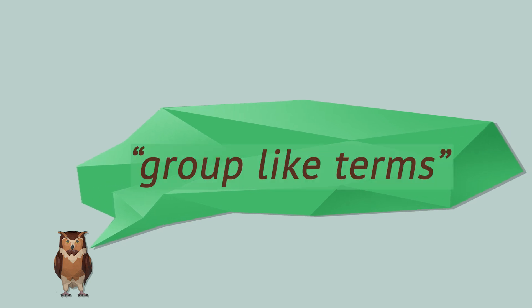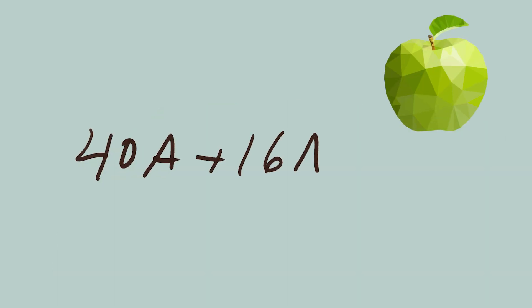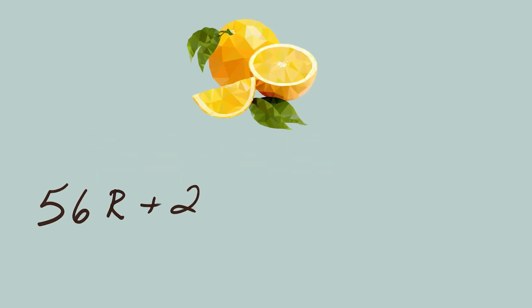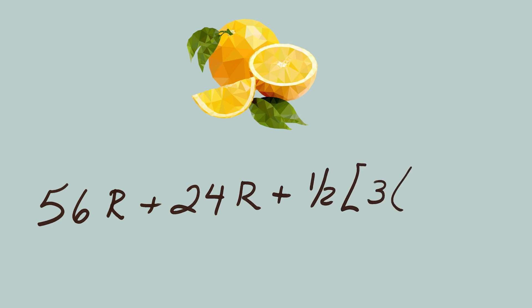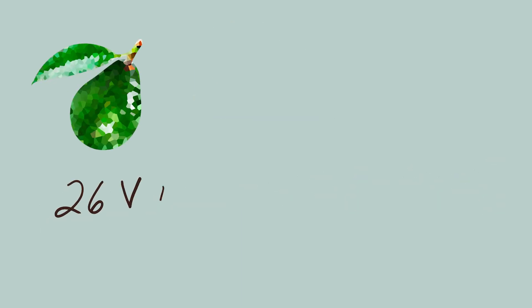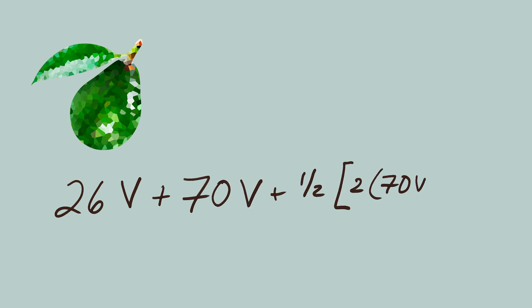Let's group like terms together — all the apple terms together, all the orange terms together, and all the avocados together. Apples: 40A plus 16A. Oranges: 56R plus 24R plus one half times the quantity of 3 times 56R. Avocados: 26V plus 70V plus one half times the quantity of 2 times 70V.